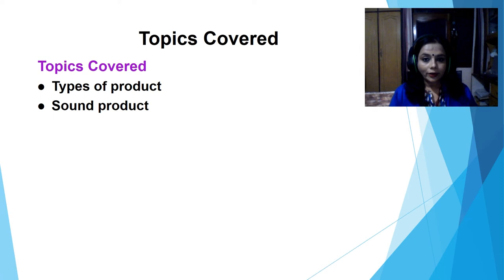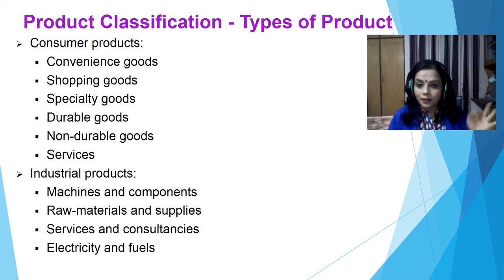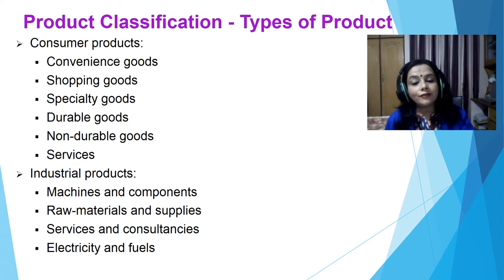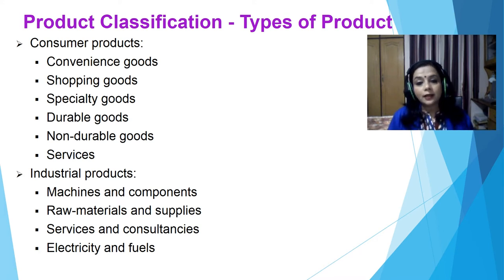In this lecture, we will cover the following topics: Types of Product and Sound Product. Products can be classified majorly into two categories: Consumer Products and Industrial Products. Consumer Products are meant for ultimate consumption by consumers and include convenience goods, shopping goods, speciality goods, durables, and non-durable services. Industrial Products are used for manufacturing or creating new products — machines and components, raw materials and supply, services and consultancies, electricity and fuels.